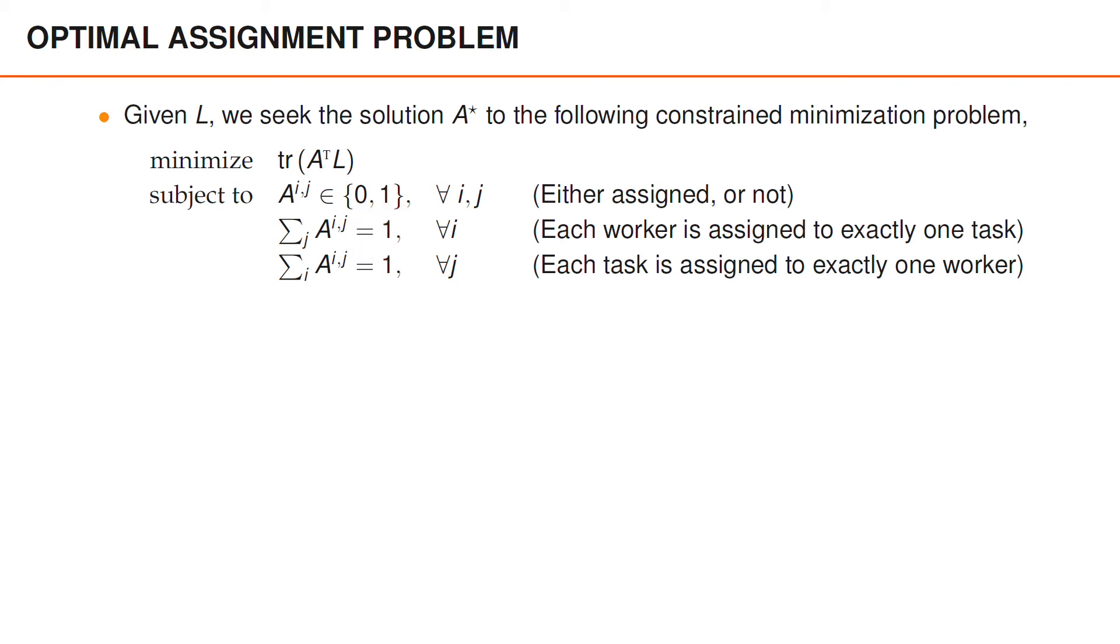And the third constraint is that each task must be assigned to exactly one worker. And for the assignment matrix, this means that if we take a sum over the rows, then for each column, this sum must be equal to 1.